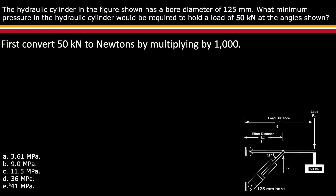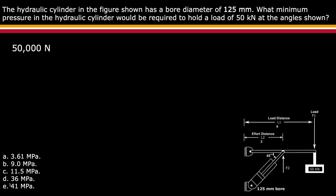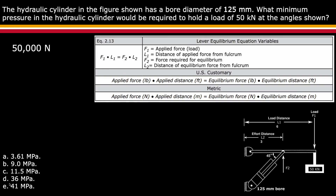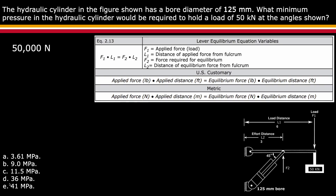First, begin by converting the 50 kilonewtons to newtons by multiplying by 1000, which equals 50,000 newtons. Determining from the question and the graphic that this is a third-class lever, use equation 2.13 to solve for the equilibrium force.